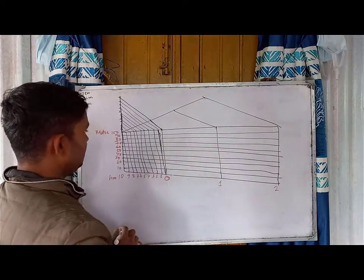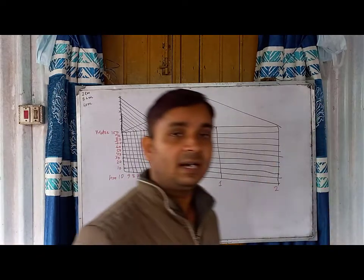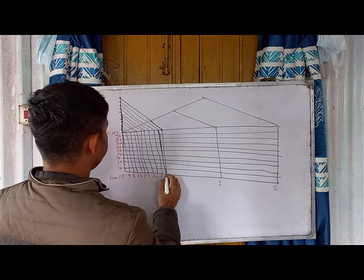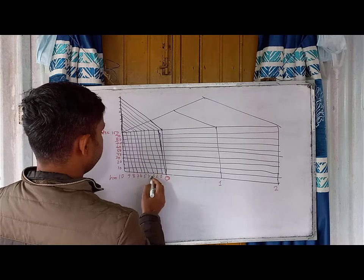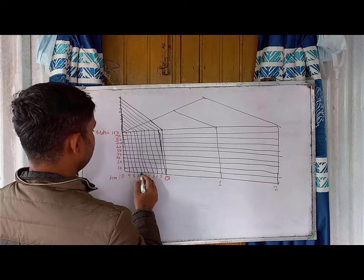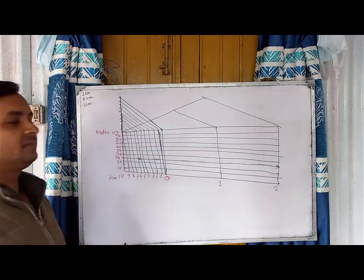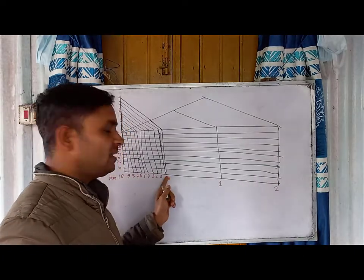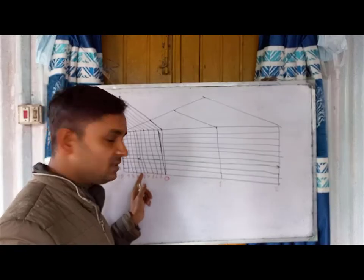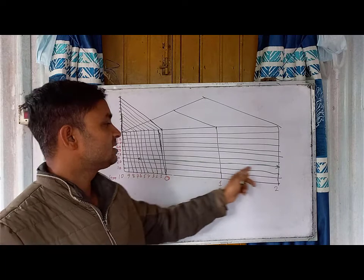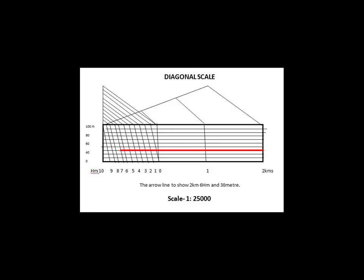Now almost finished. Our requirement was 2 km — from here to here, 2 km. And 6 hectometer: 1, 2, 3, 4, 5, 6 hectometer. And 30 meter: 10, 20, 30. This is your required length — 2 km on the primary part, 6 hectometer on the secondary division, and 30 meter on the tertiary division. Go through this line at 10, 20, 30 and just color or indicate the line.